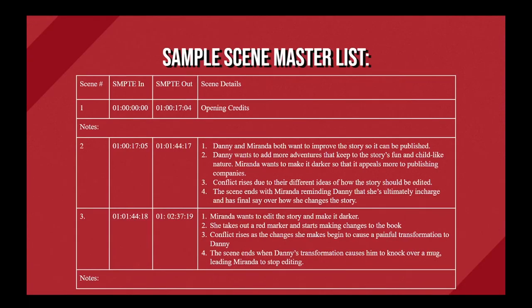For example, this is how our scene list could look for the first three scenes of Danny and the Wild Bunch. Scene 1: SMPTE in 1:00:00:00, SMPTE out 1:00:17:04. Scene 2: SMPTE out 1:01:44:17. Danny and Miranda both want to improve the story so that it can be published. Danny wants to add more adventures that keep to the story's fun and childlike nature, while Miranda wants to make it darker so that it appeals to more publishing companies. Conflict rises due to their different ideas of how the story should be edited. The scene ends with Miranda reminding Danny that she's ultimately in charge and has the final say over how she changes the story.